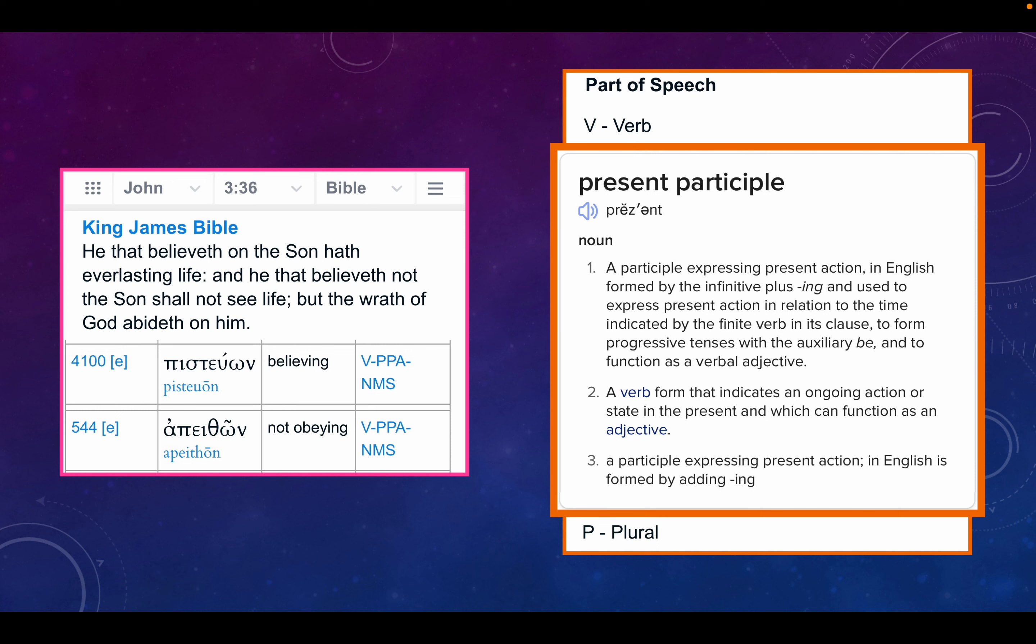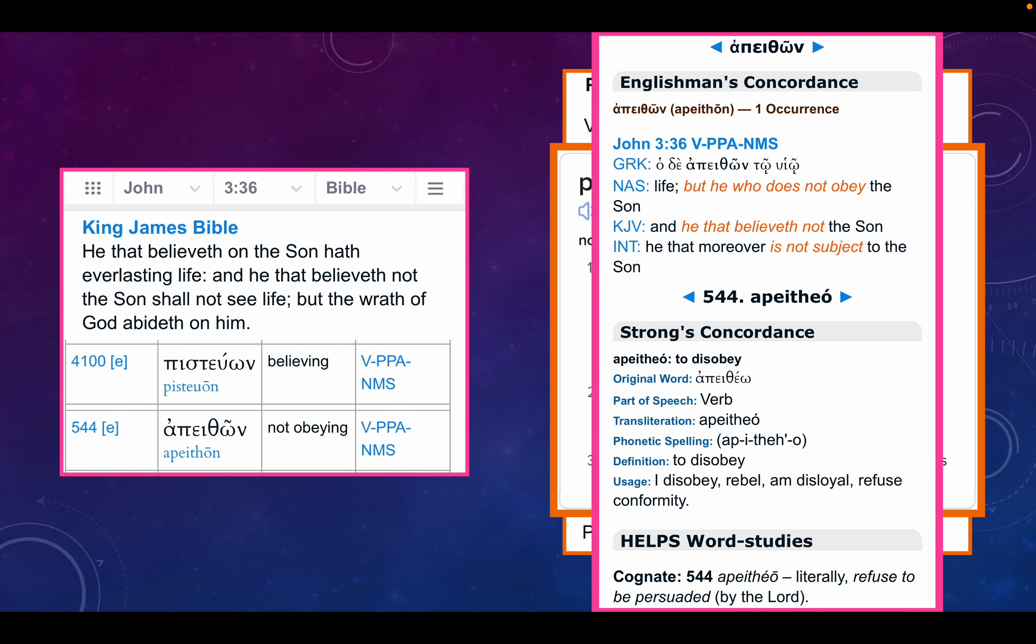By the way, in the King James, when it says he that believeth not, it's not me pisteon. It's me or apetheon. Not obeying, not obeying the Son. Apetheon, it's only used in that particular verse. It's derived from apetheo, to disobey, to rebel, to be disloyal, to refuse conformity. Literally, to refuse to be persuaded by the Lord.